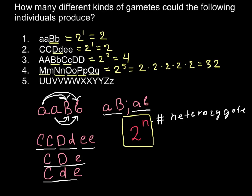In our last example, number five, all of the genes are present in the homozygous dominant form except one, which is in the heterozygous form. We ignore all genes in the homozygous form, whether dominant or recessive. So once again we have 2 raised to 1, and the answer is that only two types of gametes are possible here. Those are our answers for today.